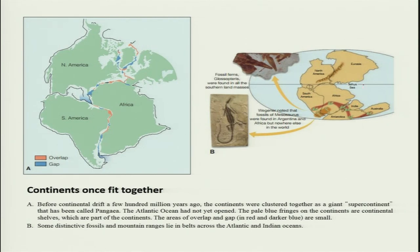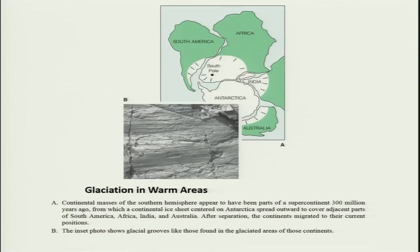They started looking at rocks too, and found similarities between them. If you take India, for example, and try to see what climate exists here — whether the same climate exists elsewhere — the answer is no. But when they were all together in Gondwana land, they had almost similar climates. They were also able to identify glacial movements during that time, and a large number of rocks indicated glacial movements occurred, though right now there is no glacier in the Indian subcontinent.